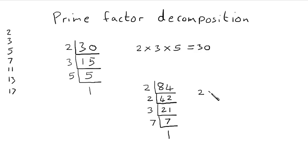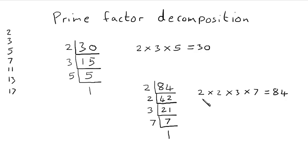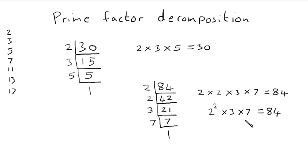So we've got 2 times 2 times 3 times 7 equals 84. Now there's something else we can do here, which is to write it in index form. Index means powers — it's the singular of indices. If we've got 2 of the same factor, rather than writing 2 times 2, we can write it more simply as 2 squared, because 2 times 2 is 2 squared. That squared is the index. So we've got 2 squared times 3 times 7 equals 84 — that is 84 written as the product of its prime factors in index form, which is neater.